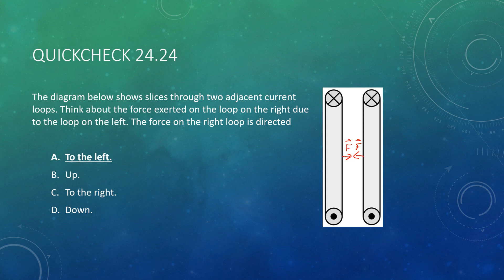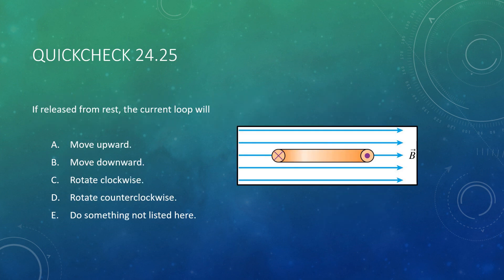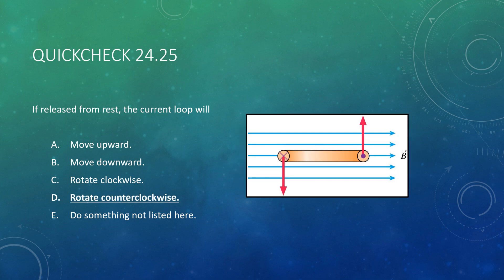Let's do one more to finish up this lecture. Here you have another current loop in a magnetic field. If you release it — pretend you're holding it in place and let go — what will this current loop do? It will rotate, and it will rotate in a counterclockwise direction. On the left-hand side, we have a current going into the page, so your thumb points into the page; a magnetic field off to the right, so your index finger points to the right, which means your middle finger points downward. So we have a force pulling that side down. Do the same on the right-hand side and we get a force pointing upward. With a force pointing down on the left and up on the right, this will rotate counterclockwise.